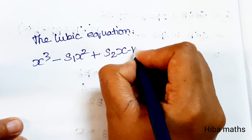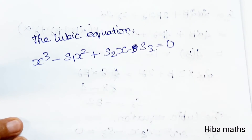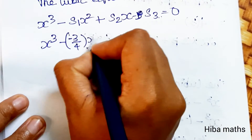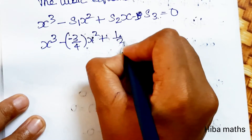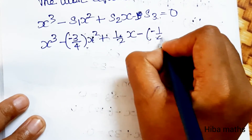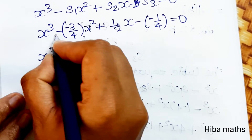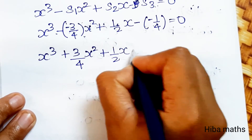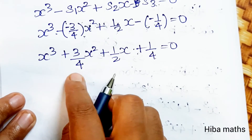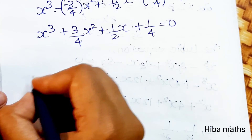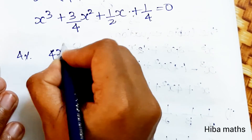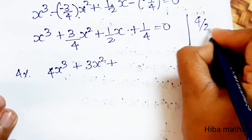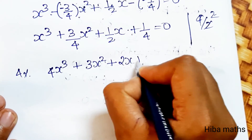Substituting into x³ − S1·x² + S2·x − S3 = 0: x³ − (−3/4)x² + (1/2)x − (−1/4) = 0, giving x³ + (3/4)x² + (1/2)x + 1/4 = 0. Multiplying through by 4: 4x³ + 3x² + 2x + 1 = 0.